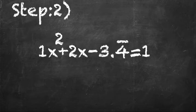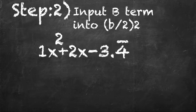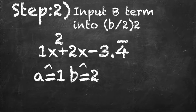After that, we're going to use the equation b over 2 squared. As you notice, if we separate the equal 1, we're just going to take it out completely just for right now. You'll notice the a variable equals 1, the b variable equals 2, and the c variable equals negative 3.4 repeating.